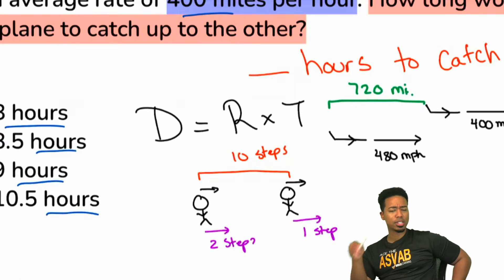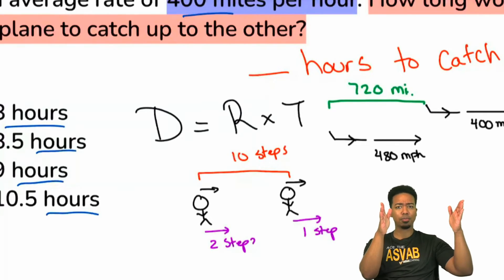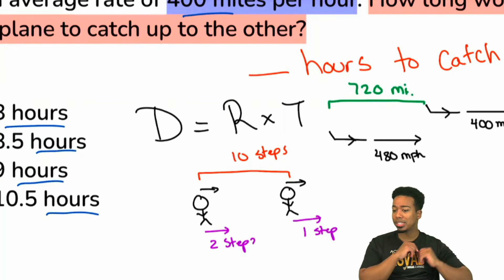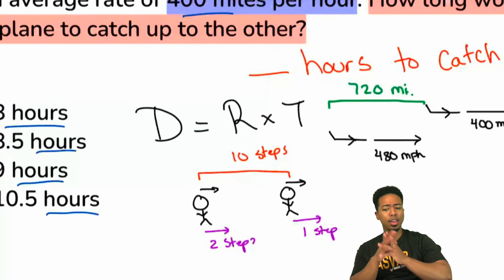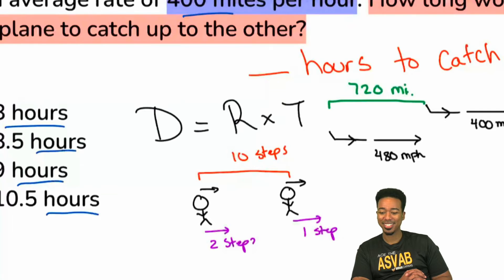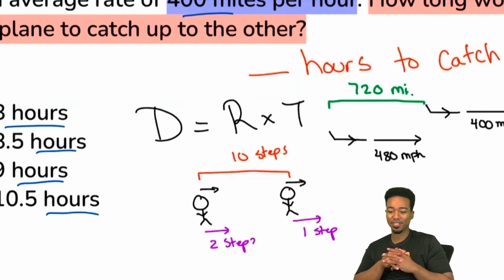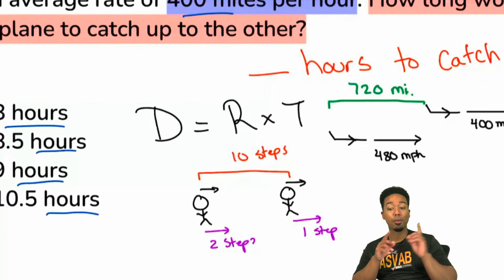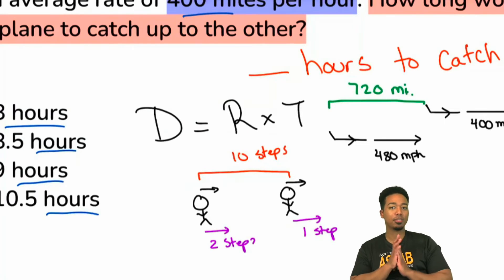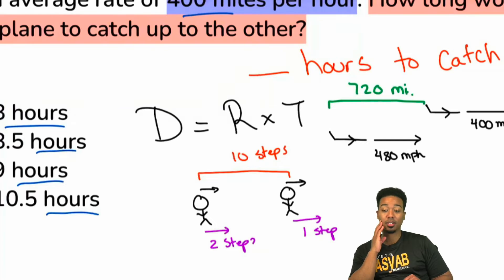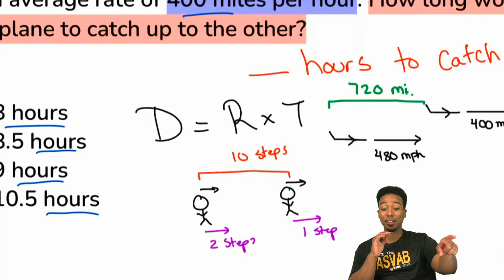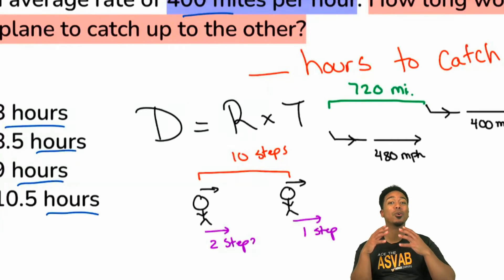Think about it — if they're 10 steps away, this person takes one step, this person takes two steps. How many steps away are they now? We have all these different answers, so this is why it's so important to understand distance, rate, and time.